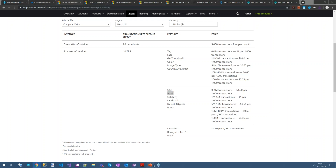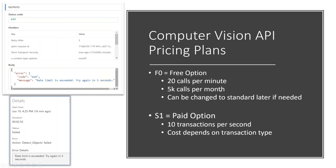If we're on the free tier with 5,000 calls per month and 20 calls per minute, what happens in our flow if we hit one of these limits? Even on the paid option, what happens if we hit 10 transactions per second? What you'll see back in Flow is an error 429 with the message 'Rate limit is exceeded, try again in five seconds.' This is the actual detailed error message if you weren't looking at the body.